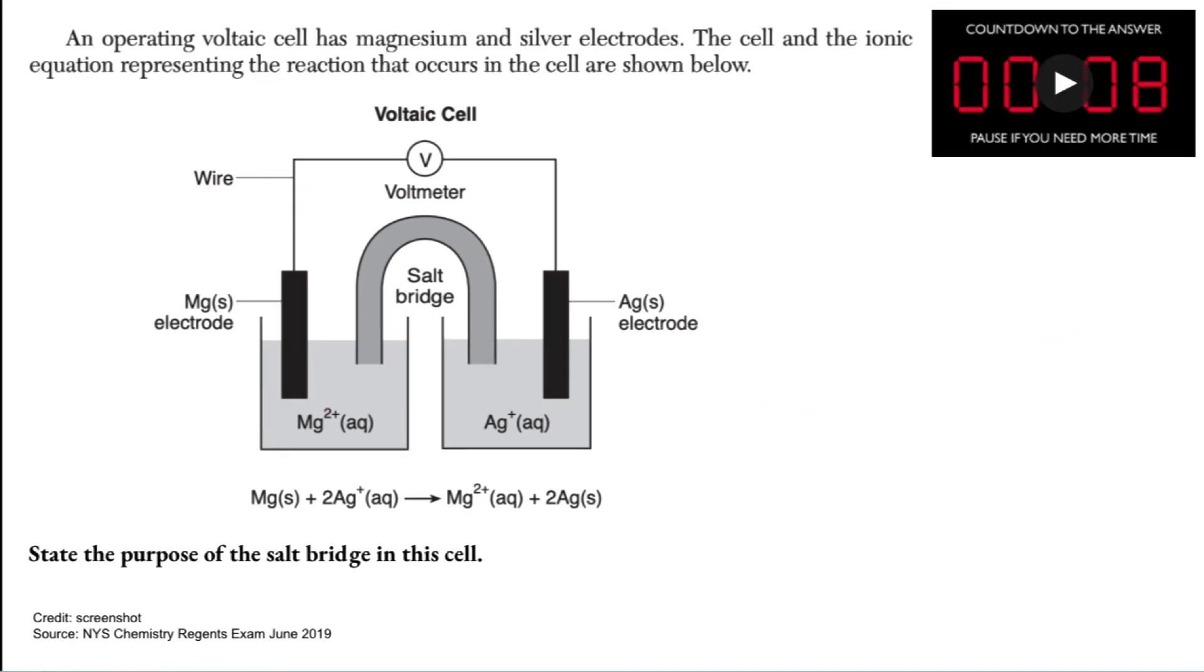And finally, state the purpose of the salt bridge in this cell. As I discussed in the simulation we were looking at before, the salt bridge allows ions in the solution to move back and forth. It just prevents there from being too much charge in any one solution and allows charges to keep moving through the circuit.